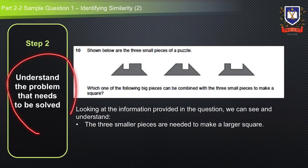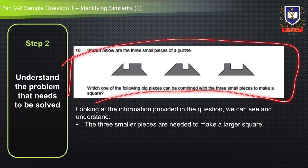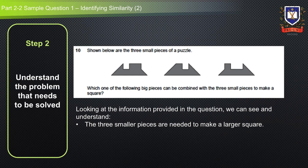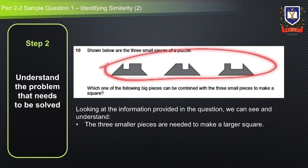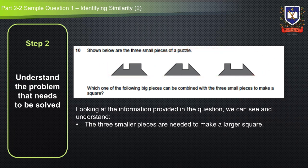Step two is to understand the problem that needs to be solved. Looking at the information provided in the question, we can see and understand the three smaller pieces needed to make a larger square. In this process it's helpful to identify important points and different patterns of these three pieces so that we can arrange and combine them with the big pieces to determine the answer.